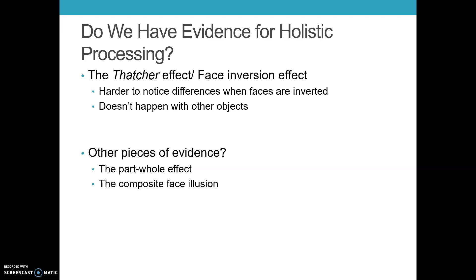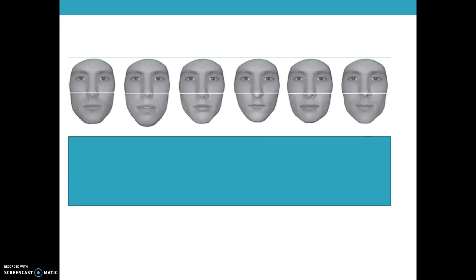Other evidence includes something known as the part-whole effect — the idea that it's much easier for us to identify facial features like eyes, a nose, or a mouth when presented in a whole face rather than in isolation. Again, this is not something that happens with cars or houses. We also have the composite face illusion, where looking at these faces, every single one looks different.